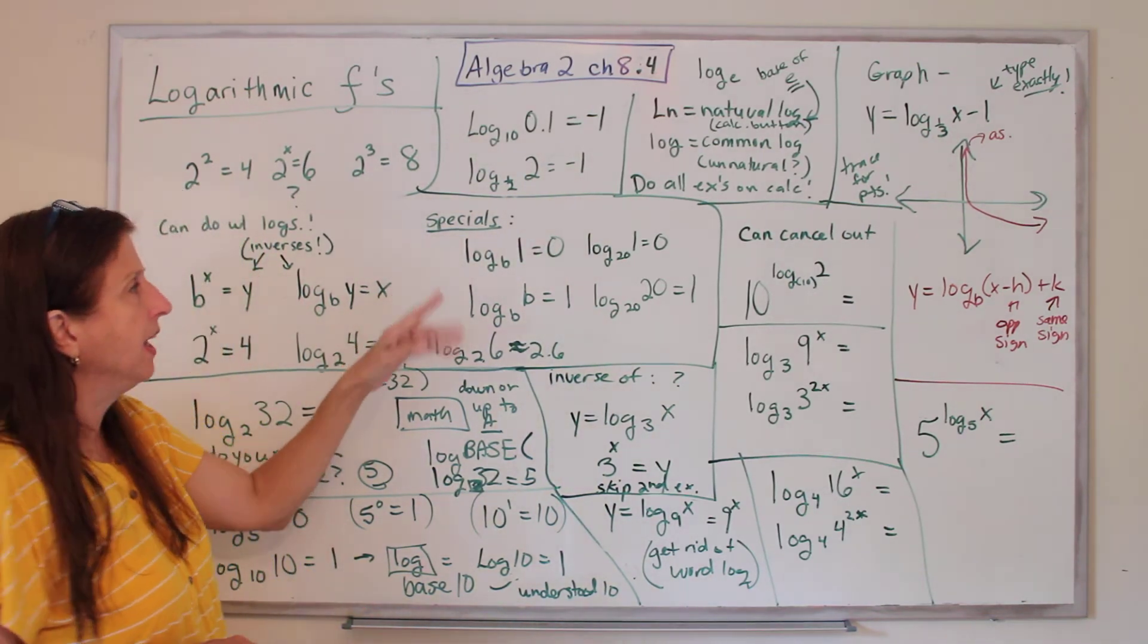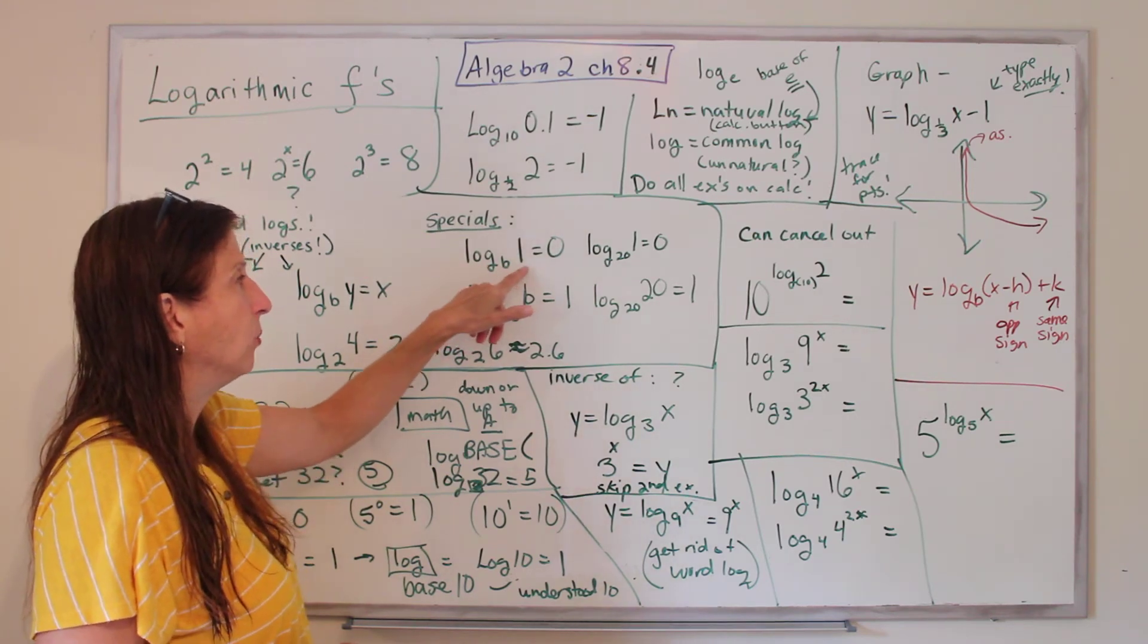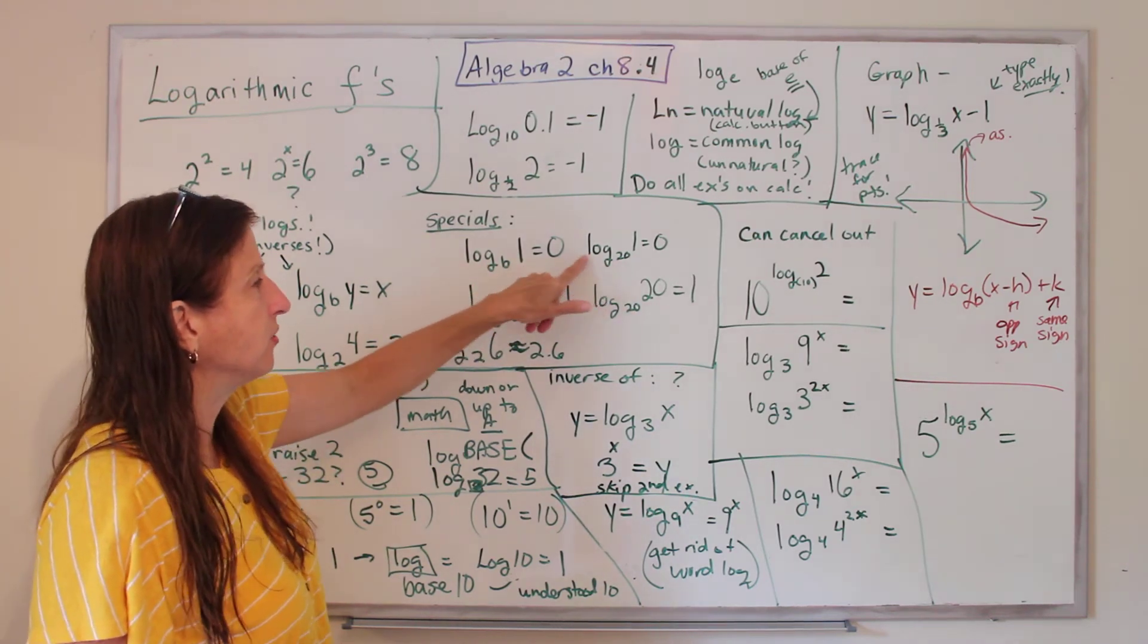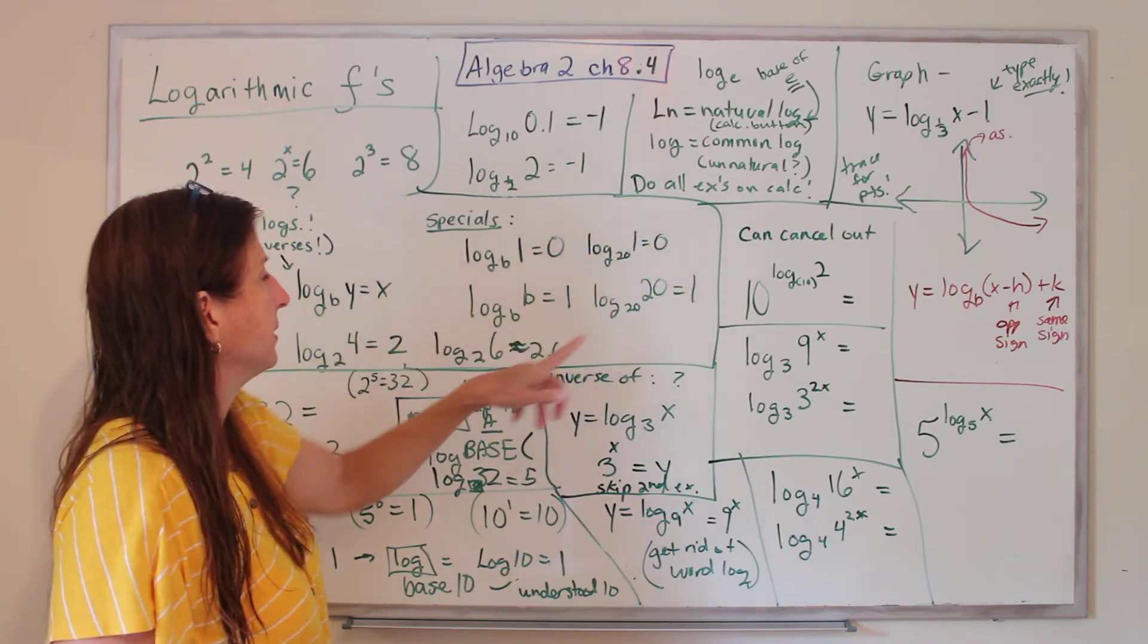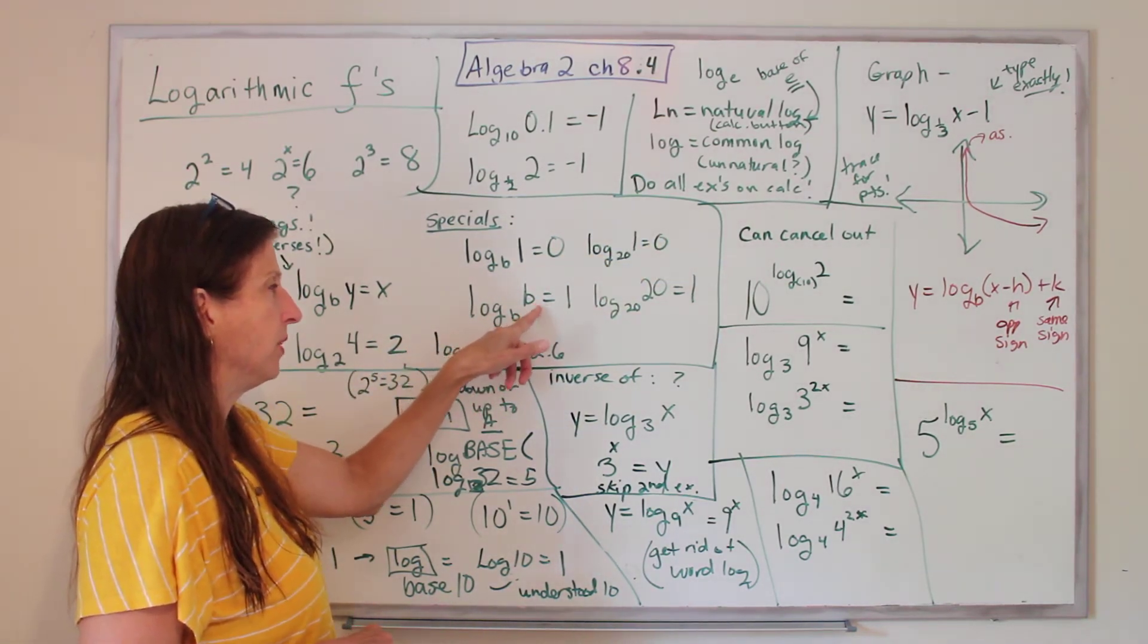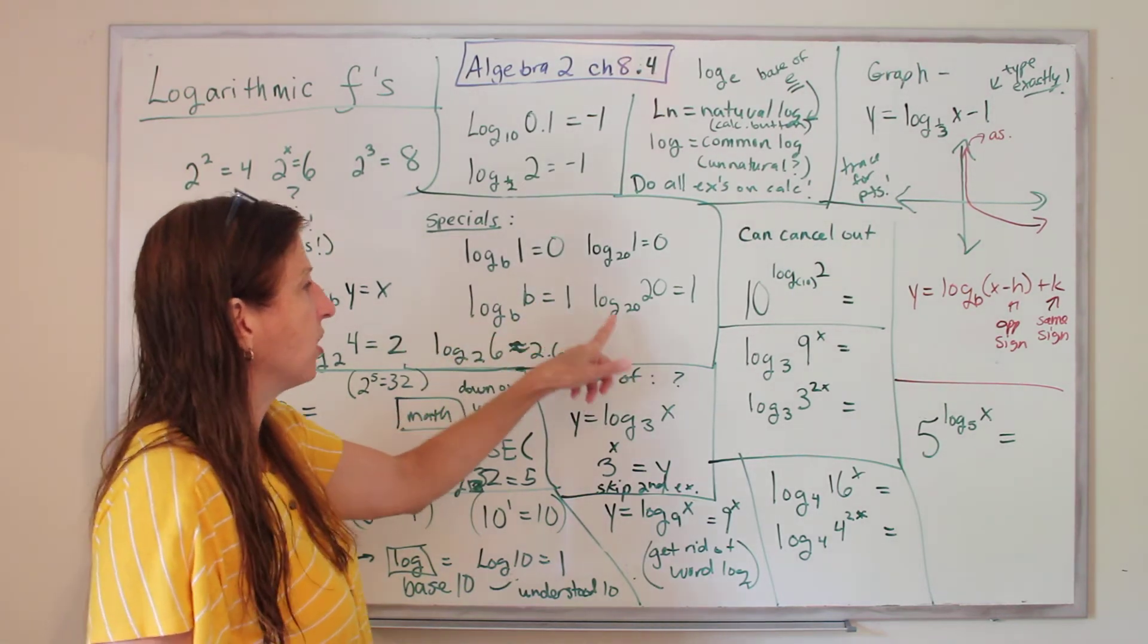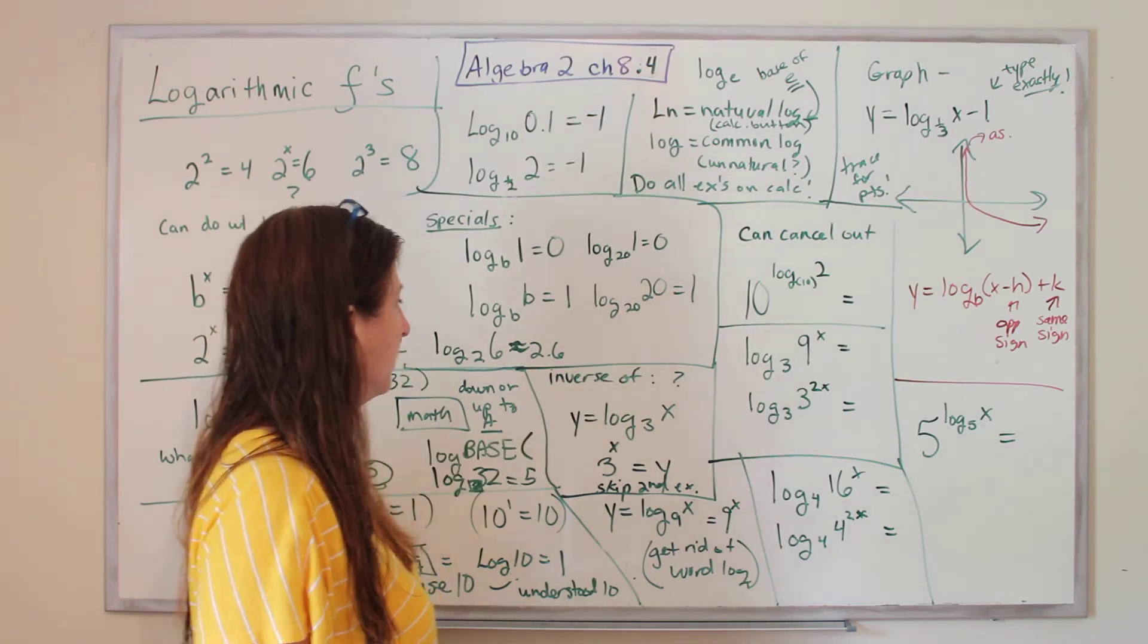Now, we've got some specials. If you have a log of any base of 1, it's always 0. So you try, log base 20 of 1, 0. If you have log base and the number here is the same number, it's always 1. So try it on your calculator. Log base 20 of 20 is 1.